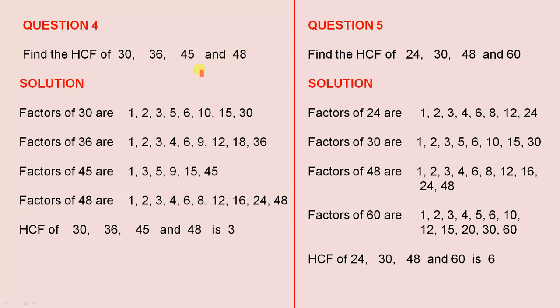Question 4. Find the HCF of those 4 numbers — so you can also have 4 numbers. Firstly let's look at the factors of 30. There they are. The factors of 36 are these numbers. The factors of 45 are these numbers here. And the factors of 48 are these numbers here.